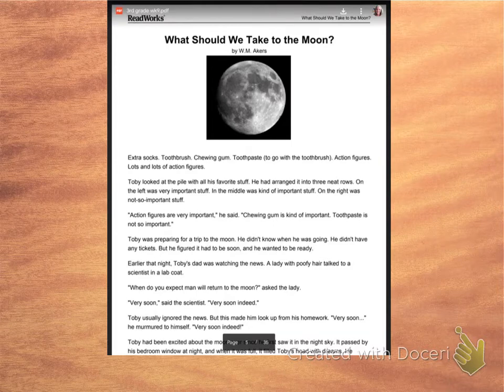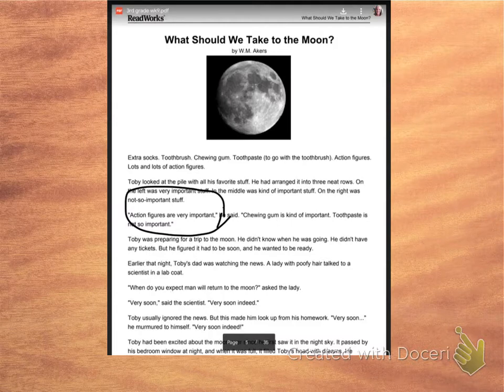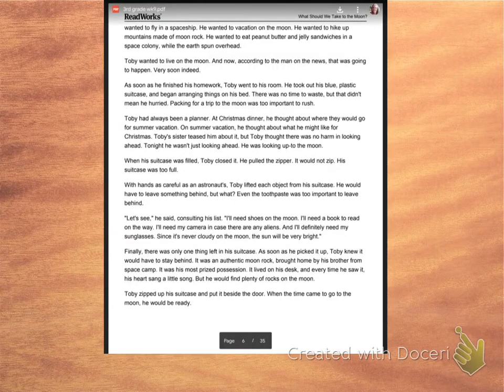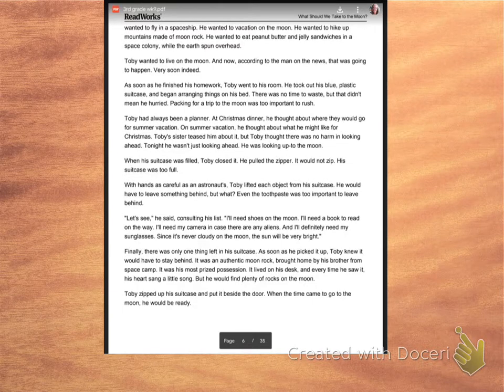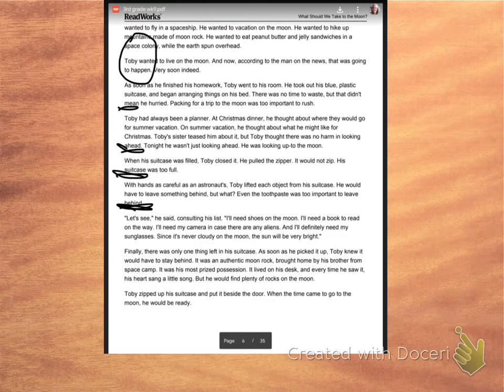When I'm looking in here I start to notice things like dialogue, things we've studied. Right here, action figures are very important said dad, chewing gum is kind of important, toothpaste is not so important. As I moved on reading the story I saw a little bit more dialogue in here. And another thing I noticed was that instead of indenting, which is moving in for each paragraph, they skip lines. So as you can see there, they skip the line. Here's another spot, so these are all different paragraphs and we practice that in writing as well.